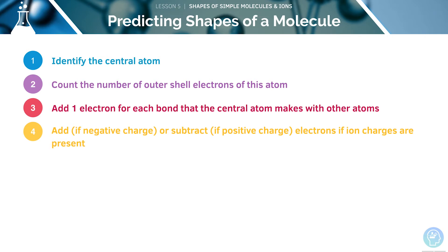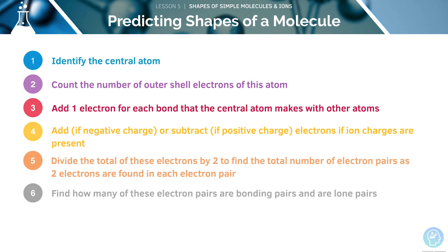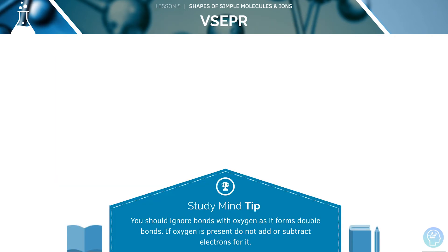In step 4, we will add or subtract electrons if ionic charges are present. If a negative ionic charge is present, you should add an electron, but if a positive charge is present, you should subtract an electron. Now, divide the total of these electrons by 2 to find out how many electron pairs there will be, since 2 is the number of electrons in a pair. Now, we can find out how many of these pairs are lone pairs and how many are bonding pairs, and finally we can use this number to predict the shape. You should ignore bonds with oxygen as this forms double bonds — if oxygen is present, do not add or subtract electrons for it.